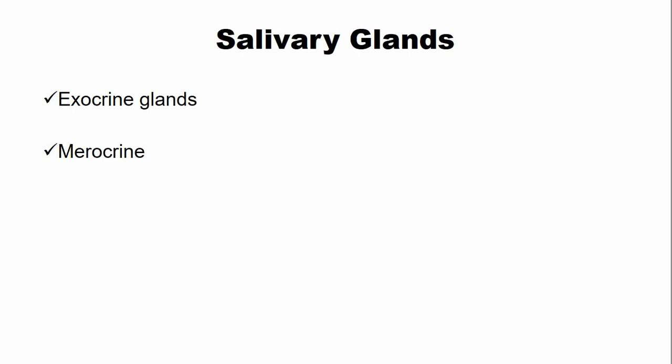The salivary glands are also known as compound glands, which means that salivary glands have various tubules and those tubules join the main duct. Now let's look at the classification of salivary glands.